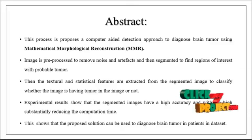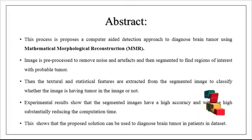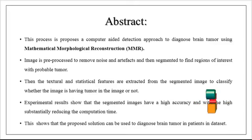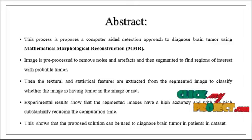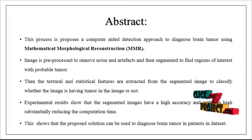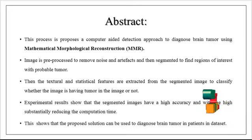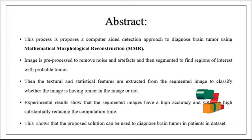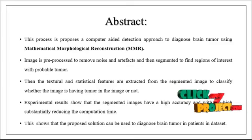The image is preprocessed to remove noise and artifacts present in the image, and then segmentation is applied to find the region of interest with the probable tumor. Textural and statistical features are extracted from the segmented image to classify whether the image contains a tumor or not, based on suitable classifiers. The experimental results show that the segmented image achieves high accuracy with high sustainability, reducing computational time.